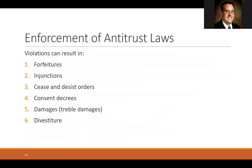Second is an injunction, which means that you have to cease some sort of activity or start some sort of activity. The third is what's called a cease and desist order, which sounds like an injunction, but an injunction is ordered by a court, where the court tells you to cease doing something. Whereas a cease and desist order usually comes straight from the Federal Trade Commission — they just send you a letter saying stop doing this, and your choice is to either stop doing it or to face them in their administrative law court.